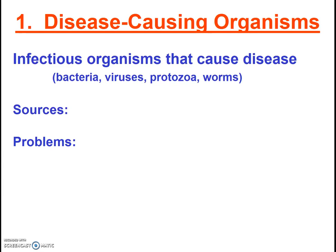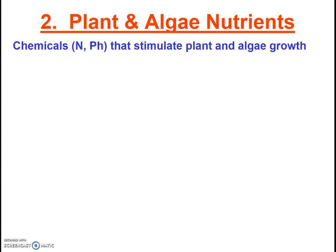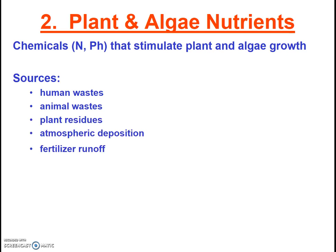Our second type of water pollution is plant and algae nutrients. Generally, the nutrients involved are nitrogen and/or phosphorus, as these are often the limiting nutrients in aquatic ecosystems. A limiting nutrient is the one nutrient that is lacking and thus limits growth — when it is provided, growth resumes. In aquatic ecosystems, nitrogen and phosphorus additions can cause massive algae blooms. This is why detergents are now marked as phosphate-free, to limit nutrient pollution. Nutrients commonly come from human and animal waste, plant residues, fertilizer runoff, and even atmospheric deposition of airborne nitrogen from cars. Stop the video if you need to get good notes written down.